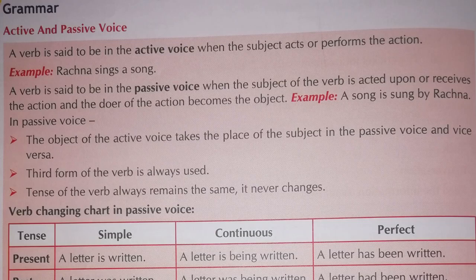In passive voice, the object of the active voice takes the place of the subject in the passive voice and vice versa. The third form of the verb is always used. The tense of the verb always remains the same — it never changes.